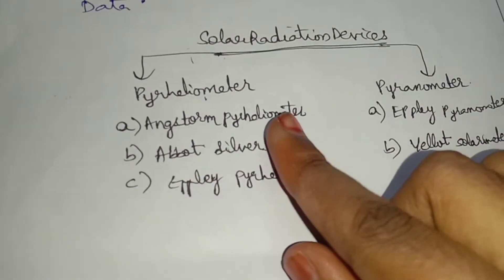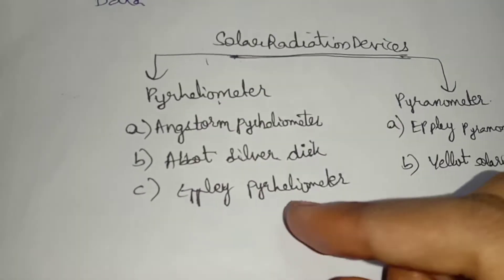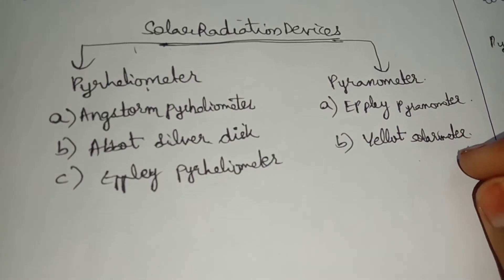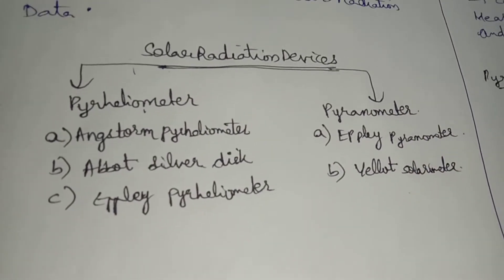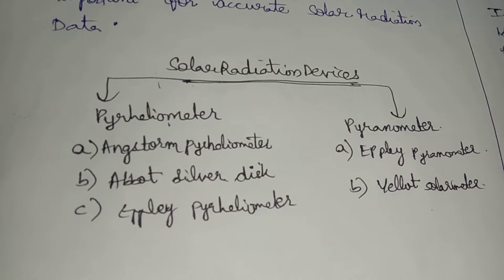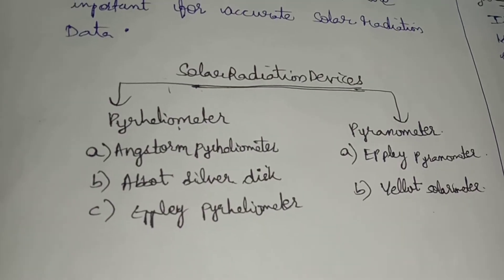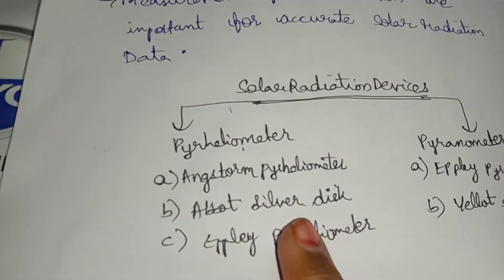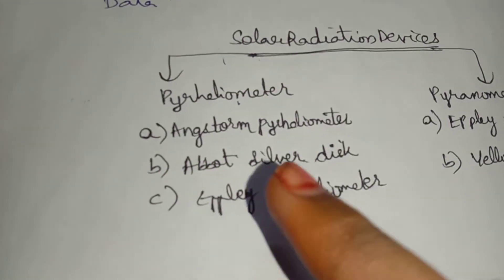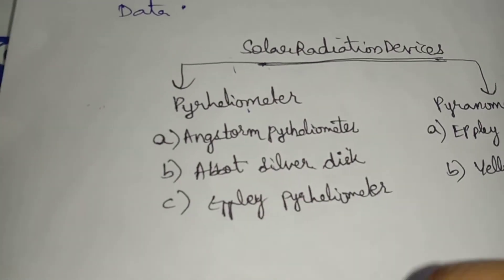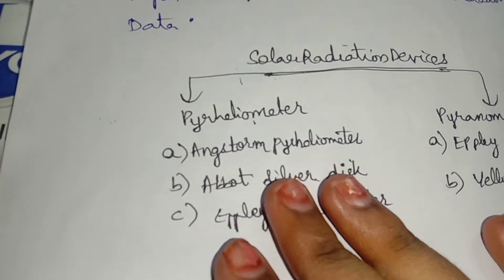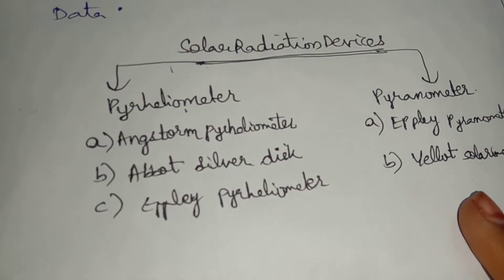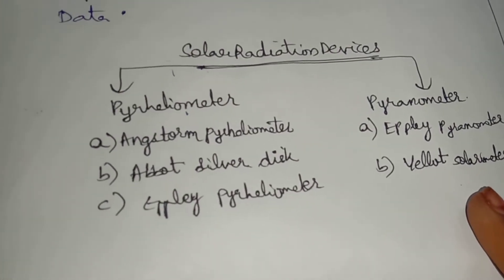In pyroheliometers, there are three types: the applied pyroheliometer, solarimeter, and it can be further classified. The pyroheliometer measures only beam radiation. It can also be measured in both beam radiation and diffuse radiation.